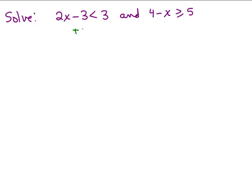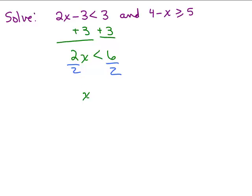On the left side, we're going to add 3 to both sides and we're trying to isolate the X. So I have 2X is less than 6, and we'll divide both sides by 2, and that gives us X is less than 3. So on the left hand side we get X is less than 3.